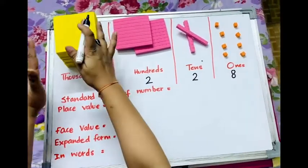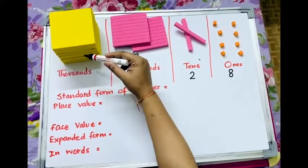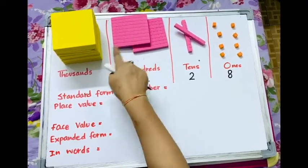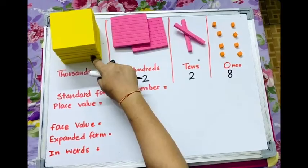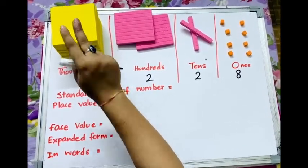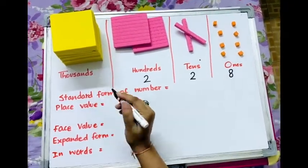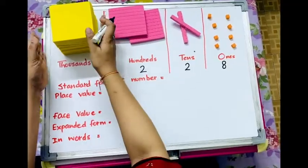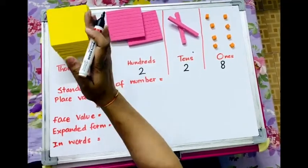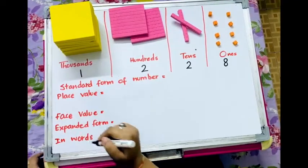Finally, this huge block is made up of 10 hundreds blocks. If you can see, 1, 2, 3, 4, 5, 6, 7, 8, 9, 10 of these hundred blocks. So, we can also call it thousands. And how many of these I have? I have one huge block of thousands here.